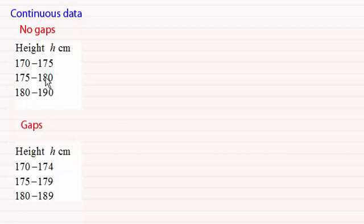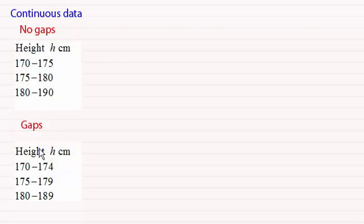I've got here a table of values — let's say for the height h measured in centimetres for some students. With this table I've got no gaps. There are no gaps between moving from one interval into the next. You can see the 175 here goes straight into the 175 there, and the same with 180. Whereas in this second table I've got gaps — a gap of one unit going from 174 to 175, and the same with 179 to 180. So there is a difference here.